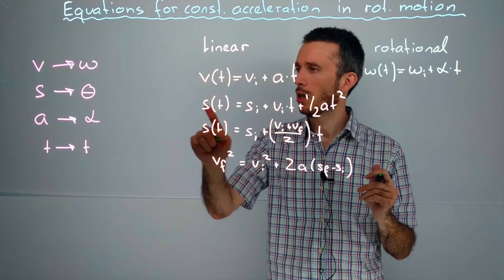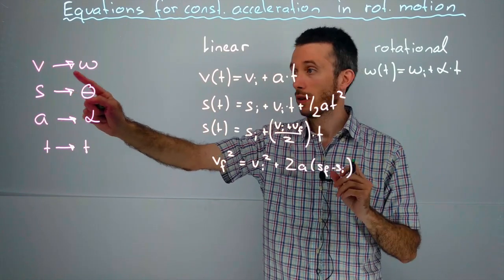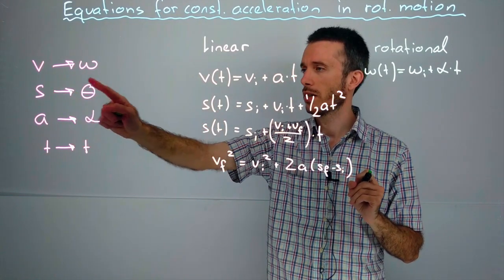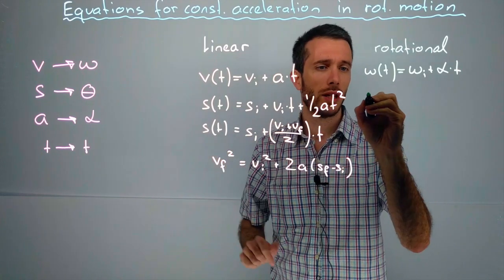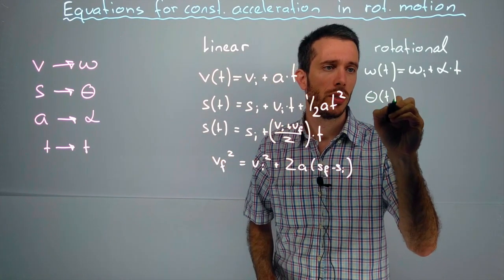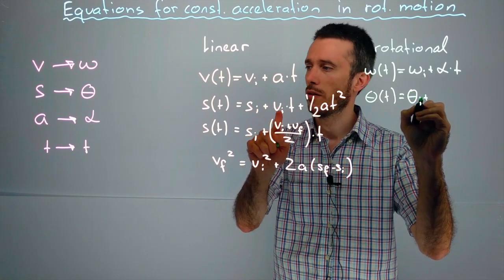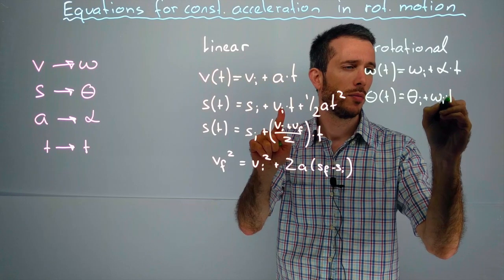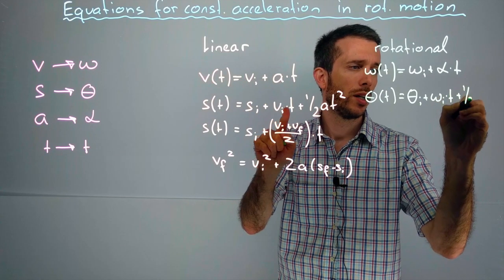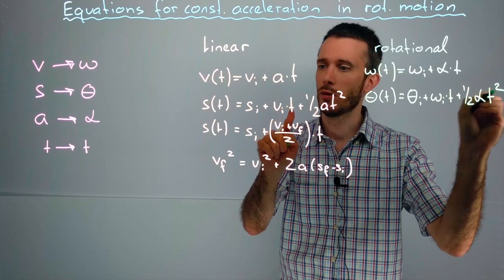Next one, position. We're going to replace the linear position s by the angular position theta. So, theta as a function of time is theta initial plus v was omega, omega initial times time plus one-half alpha times t squared.